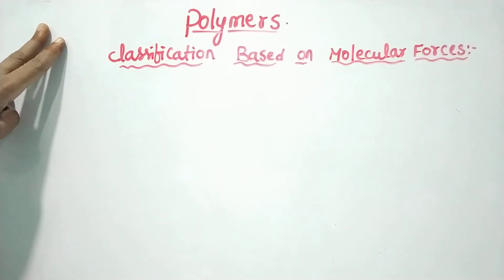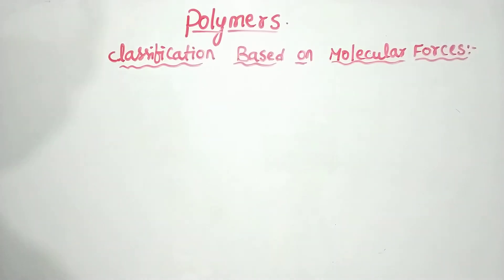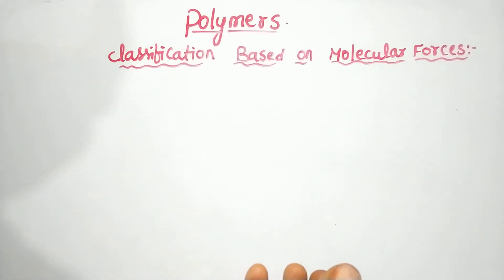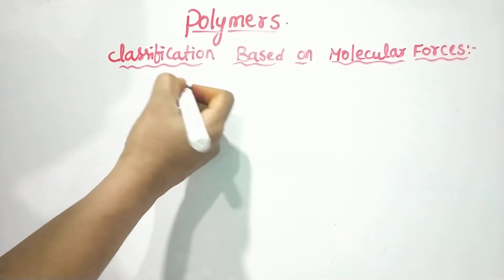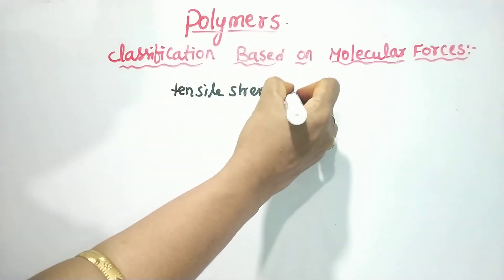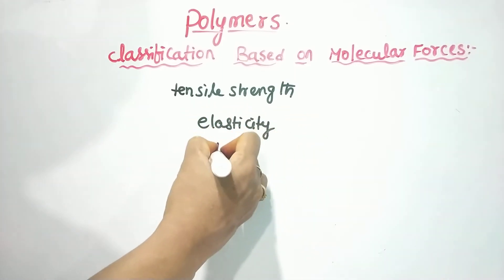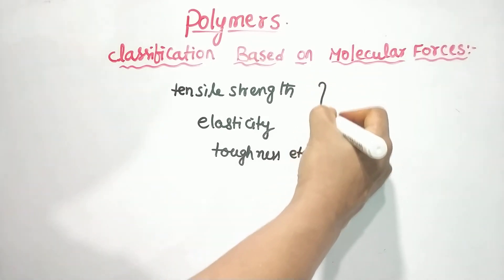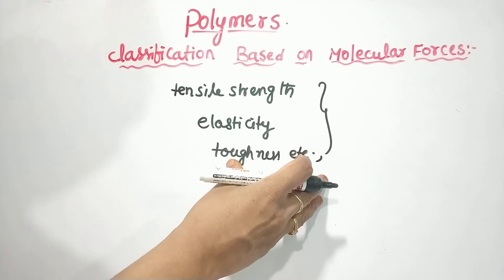Welcome to Chemistry class. Today we will discuss the classification of polymers based on molecular forces. We choose polymers that are hard or soft based on some properties. We have forces of attraction between molecules. We will classify four types of polymers based on tensile strength, elasticity, and toughness, which arise because of intermolecular forces — van der Waals forces of attraction and hydrogen bonding.